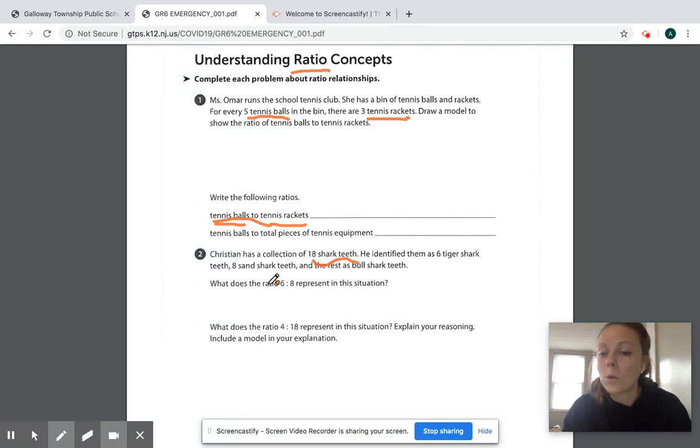So now they want you to give the word. What does the six represent compared to the eight? And then four to 18, I don't see a four listed there, so you're going to have to do some problem solving.